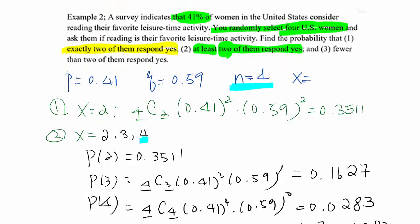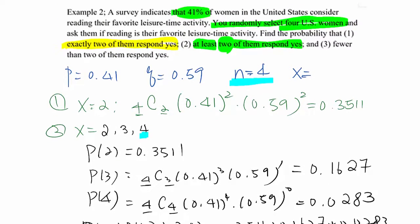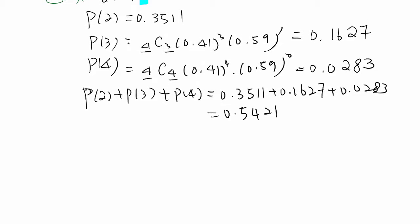Now, part C is fewer than two of them respond yes. Fewer means less than 2 but not including 2. So now we can say x will become 0 and 1. Many of you actually don't include 0, maybe unconsciously, but you have to think the whole numbers start from 0.